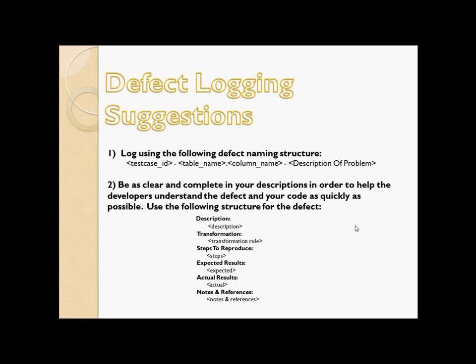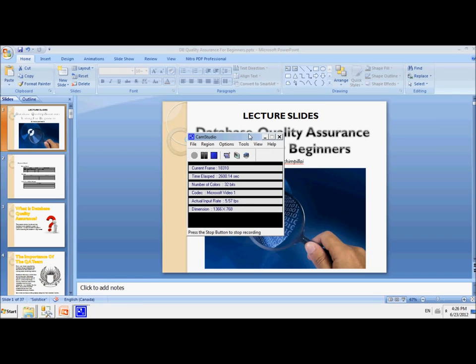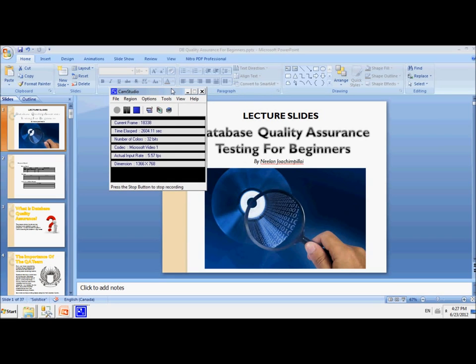That's the end of this lecture. Requirements do tend to change from company to company, so keep an open mind — not everyone will always write a proper mapping document or test strategy, and nothing is set in stone. This has been a general overview of how database QA is done. The jargon may change — for example, white box testing might be called something else — but as long as you know the basics, you'll be well on your way.